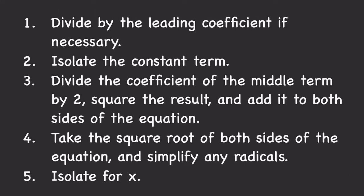Let's review the general steps for completing the square. Step 1: divide by the leading coefficient if necessary — if it's already 1, skip this step. Step 2: isolate the constant term on the right. Step 3: divide the coefficient of the middle term by 2 to get b, then square it to get b², and add it to both sides. Step 4: factor the left side into (x + b)², then take the square root of both sides and simplify radicals. Step 5: isolate x to find your solution.